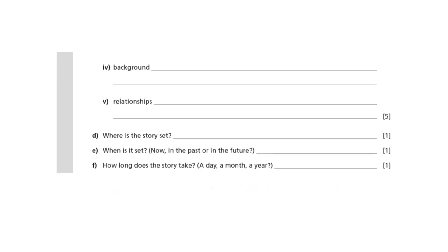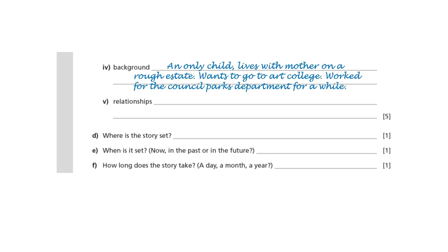A character's background — you may not include many details about their background in your story, but nonetheless it's useful to have some idea of their background. This will give you a more rounded sense of your character, and this will probably emerge as you tell the story. Relationships — you don't need all your characters' relationships, just one or two, but having a few will give you a more rounded sense of the character.